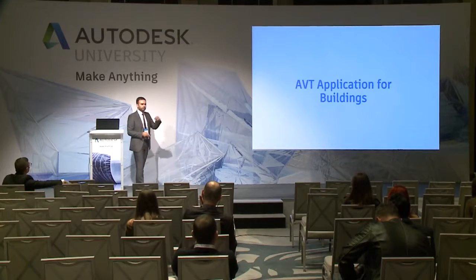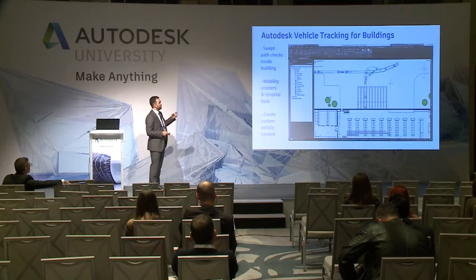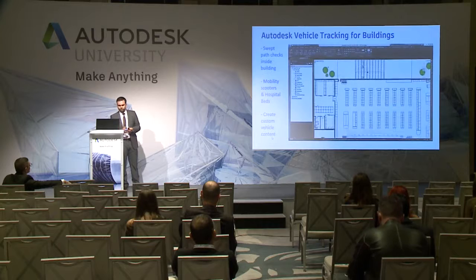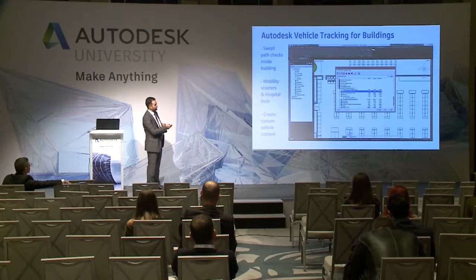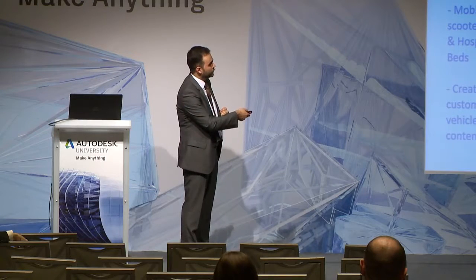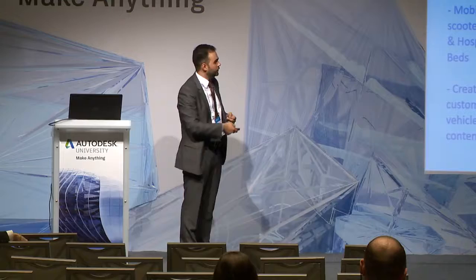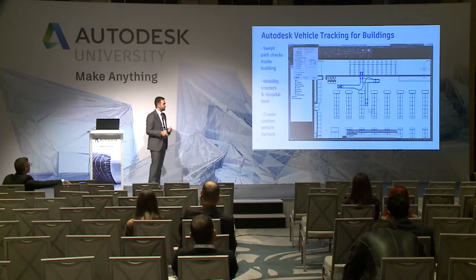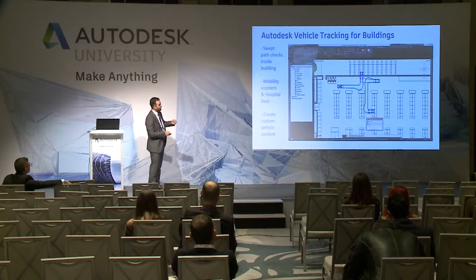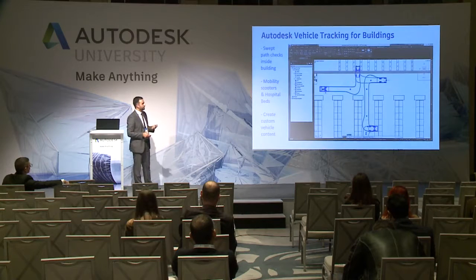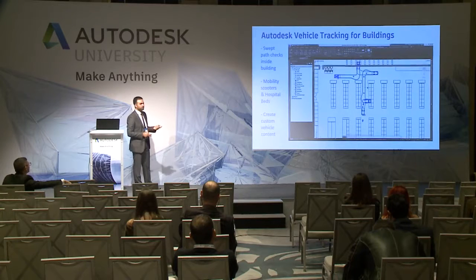Let's see for buildings — there are many uses for Vehicle Tracking inside buildings. Here is a loading bay at a large storage area. You have trucks, and you can check the possibility of trucks going backwards to unload. Not only that, you also have forklifts that pick containers and place them on storage shelves. You can check the maneuverability of those vehicles within your storage building — whether they can make the required moves or will hit a shelf.